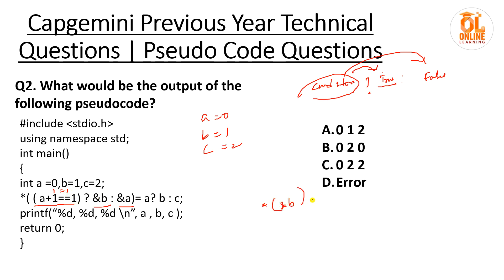Here the condition a+1 == 1 is true, so the true branch executes. Next, checking a == b: a is 0 and b is 1, so they are not equal — false — so the false value c is assigned to b. c is 2, so b becomes 2. When we print a, b, c we get 0, 2, 2 — option C is the correct answer.